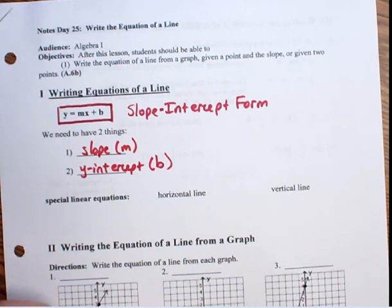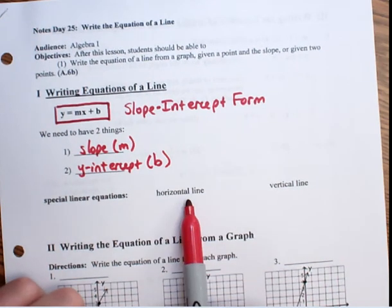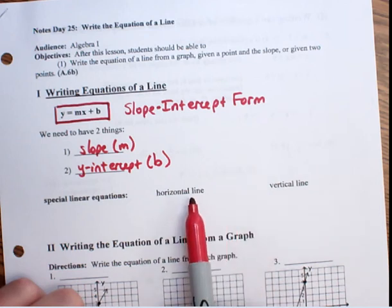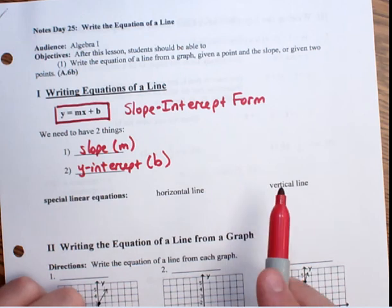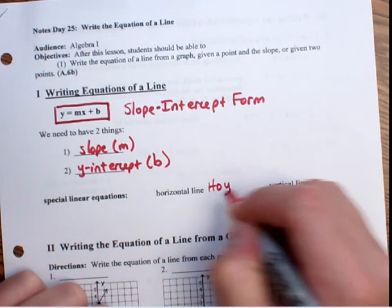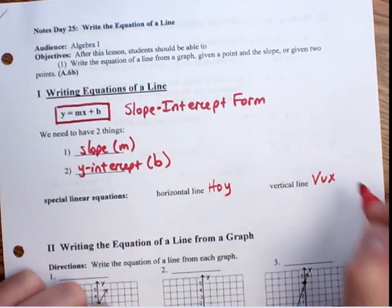Now, something to keep in mind as you're going through, we do have two special types of equations. One is for a horizontal line and one is for a vertical line. For a horizontal line, we have HOY. And then for a vertical line, we have VUX. Now, these are not real words, but it's a nice way to remember the relationships.